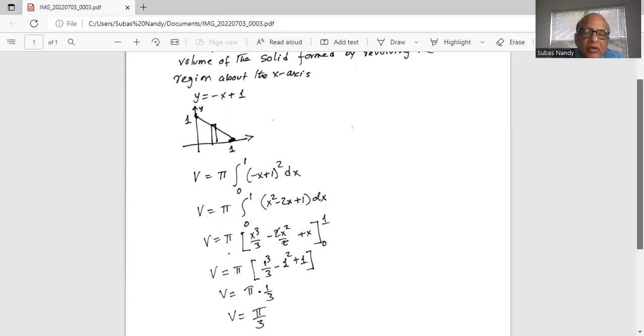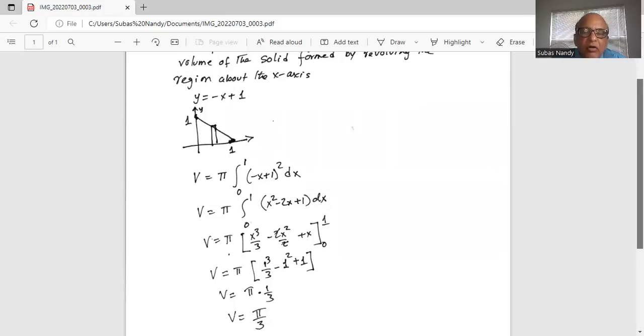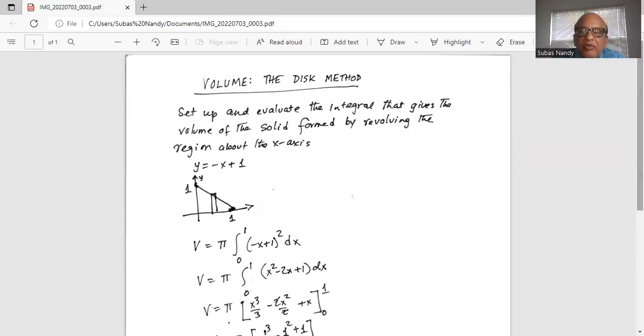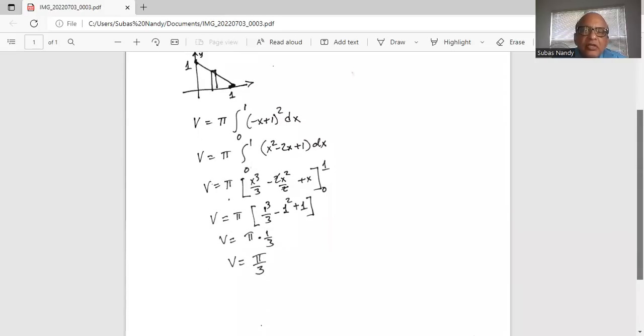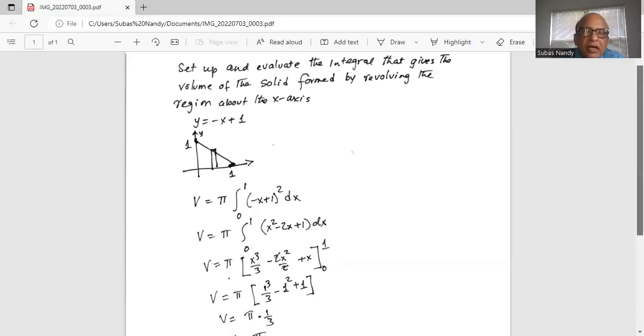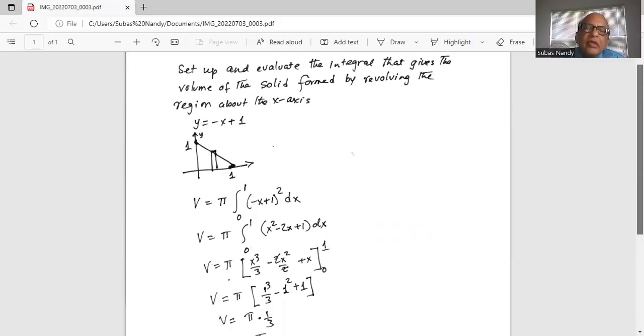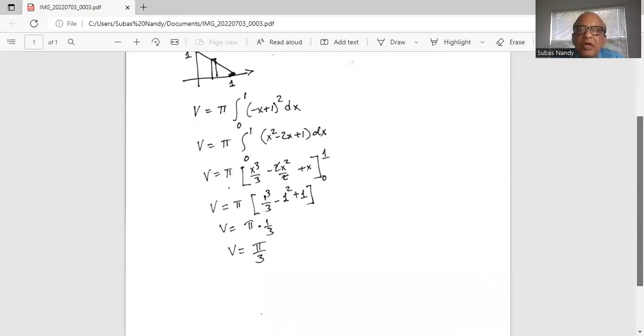This gives us volume equals pi times one-third, or volume equals pi over three. This is the volume of the solid generated by rotating the region about the x-axis, where the boundary line is y equals negative x plus one.